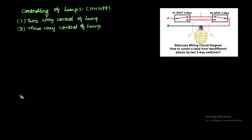From the name itself you can observe: in two-way control we are going to control the lamp from two positions, and in three-way control of the lamp we are going to control from three positions.